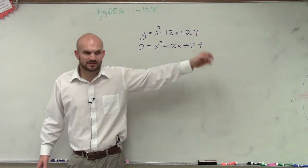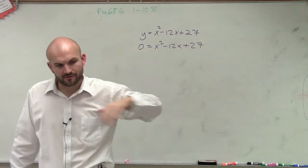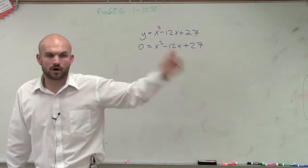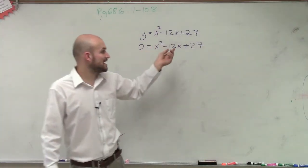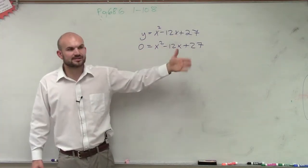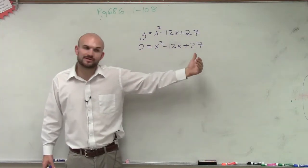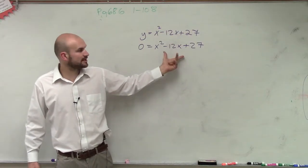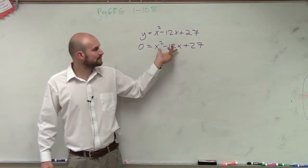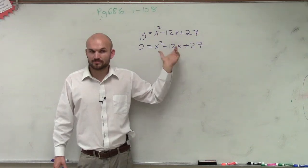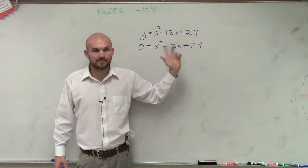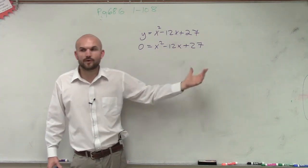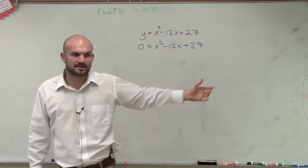We've talked about this many different ways. If you guys remember, if it was linear, we could just solve for x. Or if it was quadratic but there was only one term, we could still just solve for x by using inverse operations. However, in this problem, what you guys see is we have two variables — both x's — but they're not like terms, so we can't combine them. But we need a way to solve this.